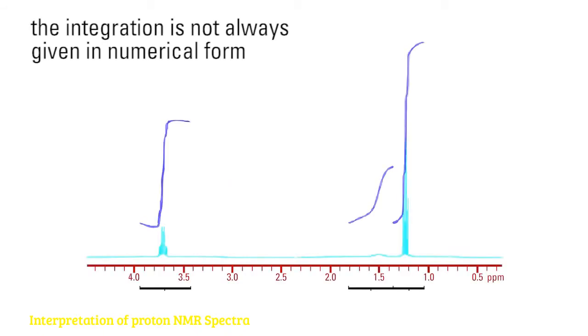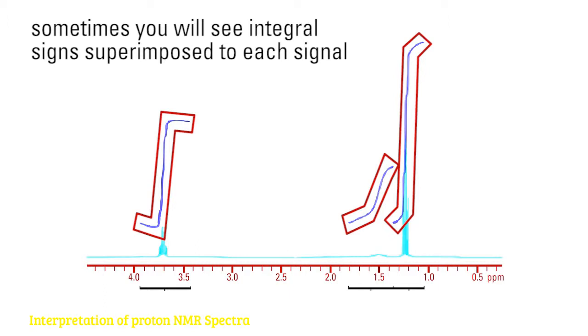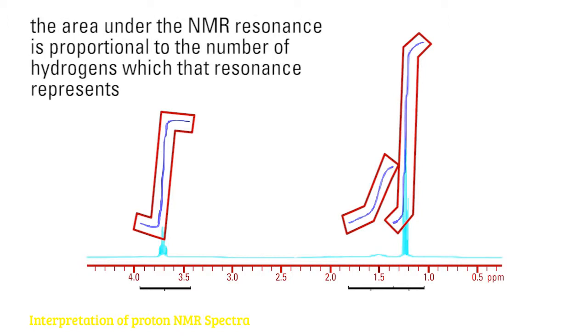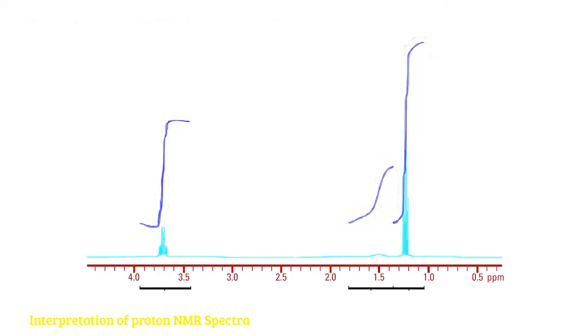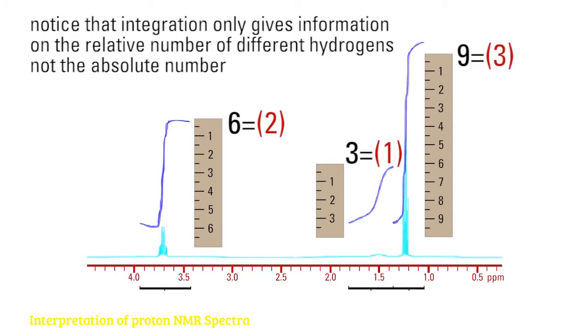The integration is not always given in numerical form. Sometimes you will see integral signs superimposed to each signal, such as in this example. The area under the NMR resonance is proportional to the number of hydrogens which that resonance represents. You can measure the integral signals using a ruler and figure out what is the proportional relationship between them. Notice that integration only gives information on the relative number of different hydrogens, not the absolute number.